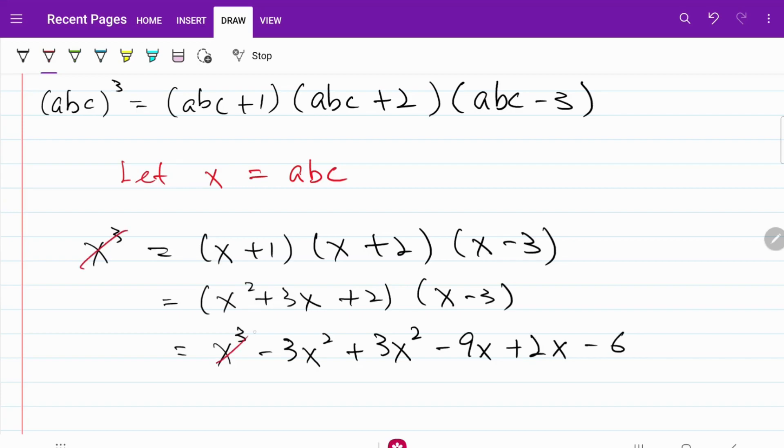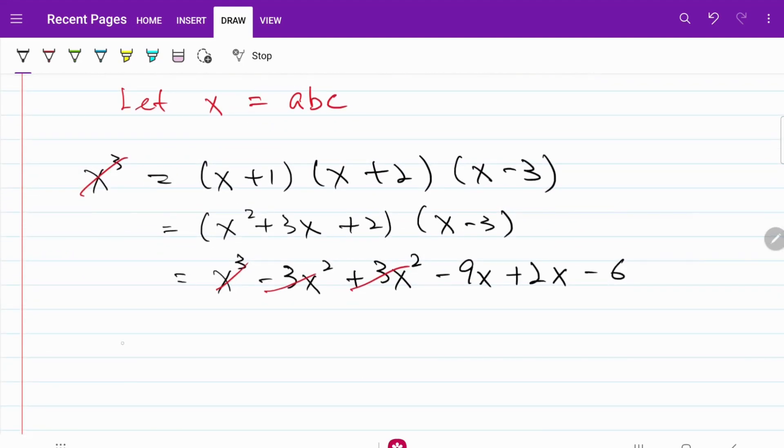x cube and x cube will cancel each other. And minus three x square and positive three x square will cancel each other. So what I now have is zero is equal to negative seven x minus six. And if I rearrange the equation, I would have abc equal to x equal to negative six over seven.